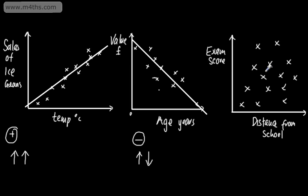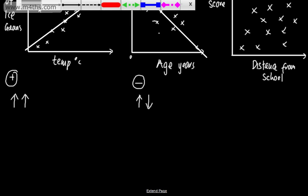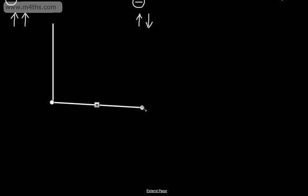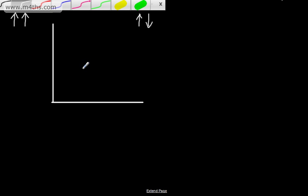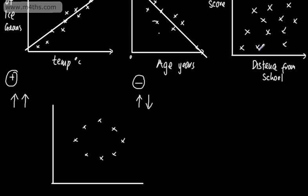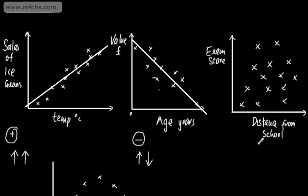There might be some other relationship. For example, if we drew another scatterplot with points scattered in a curve, it would be reasonable to think that there's some relationship going on, but it would give us no linear correlation. So these are the three things we're going to look at: positive correlation, negative correlation, and no correlation — because all of the examples we're looking at now are linear examples of correlation.